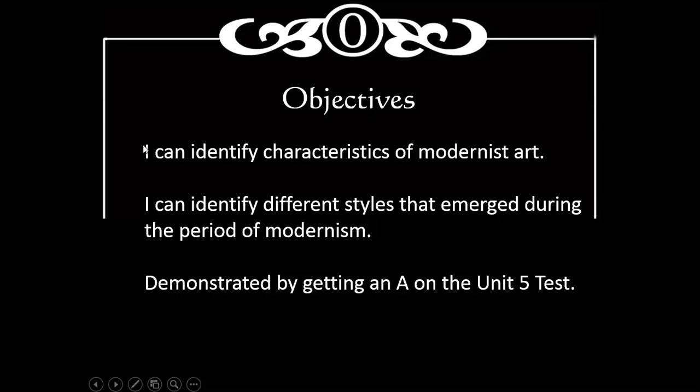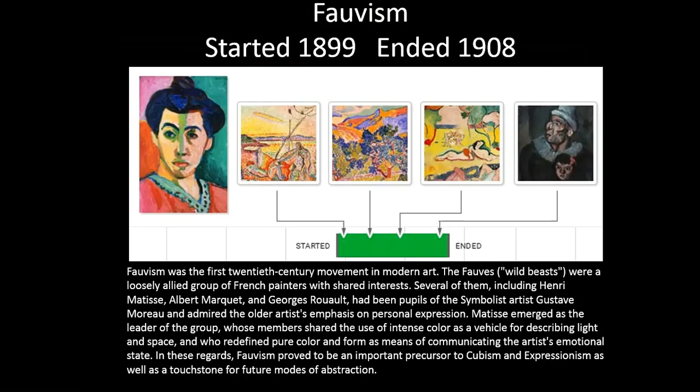Objectives today — if you read them out loud with me that would be great. I can identify characteristics of modernist art. I can identify different styles that emerged during the period of modernism. And this will all be demonstrated by getting an A on the Unit 5 test.